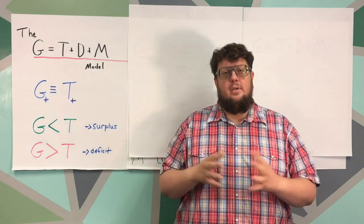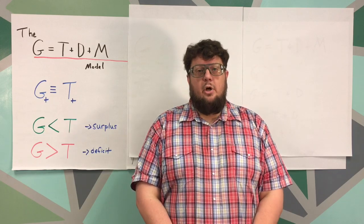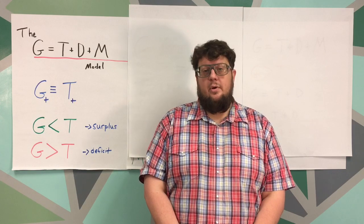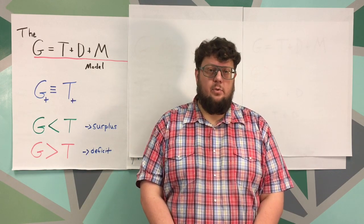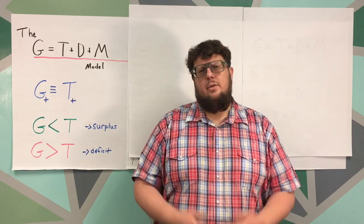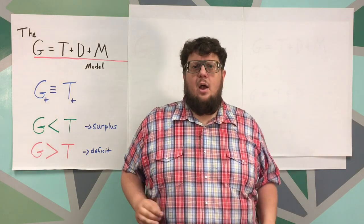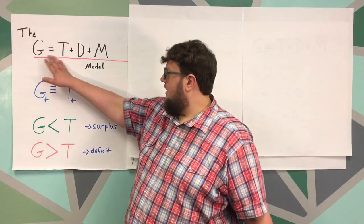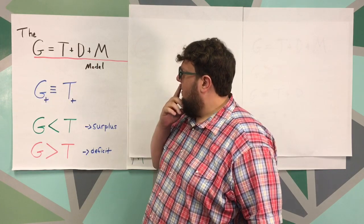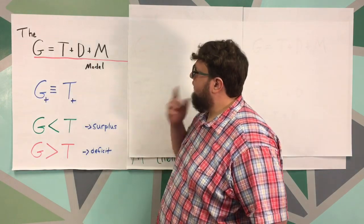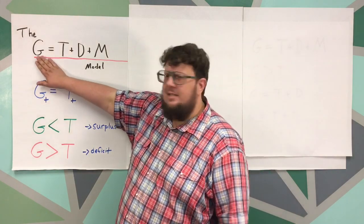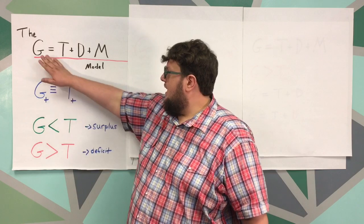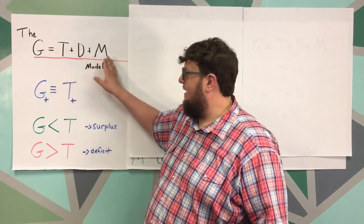You should already know that economics is the study of choices which are brought on by scarcity. We always want more than we're able to do. We always have more desire than we have resources to fill those desires. So the government reflects that. They also have the same issue we do, and so here's the model: G equals T plus D plus M. First of all though, what do those stand for? Let's go ahead and define G as government spending, so government spending is equal to T, D, and M put together.